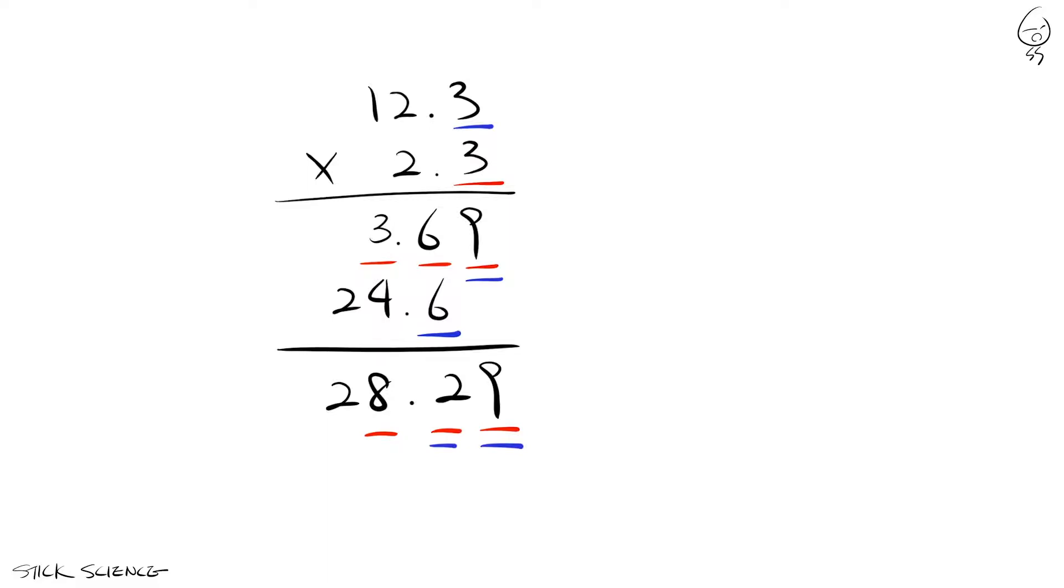So smart people decided, instead of trying to figure out where all the uncertainty went every time, they just decided that counting the number of significant figures in the number with the least amount of significant figures and matching it was good enough.